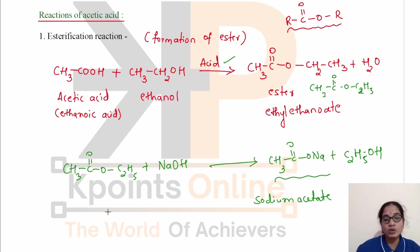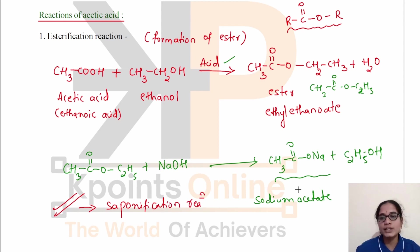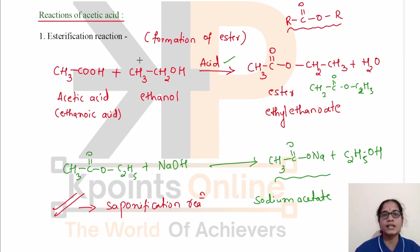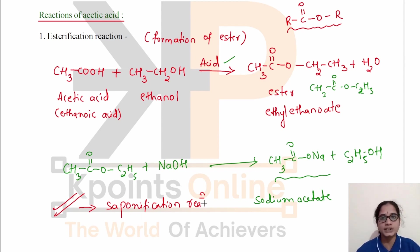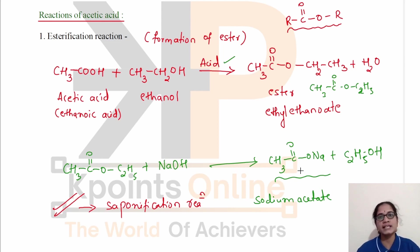This reverse reaction is called saponification reaction. The product is sodium acetate — the sodium salt of the carboxylic acid — and ethanol. This reaction is used in the preparation of soaps. We will study soaps and detergents in the next part.